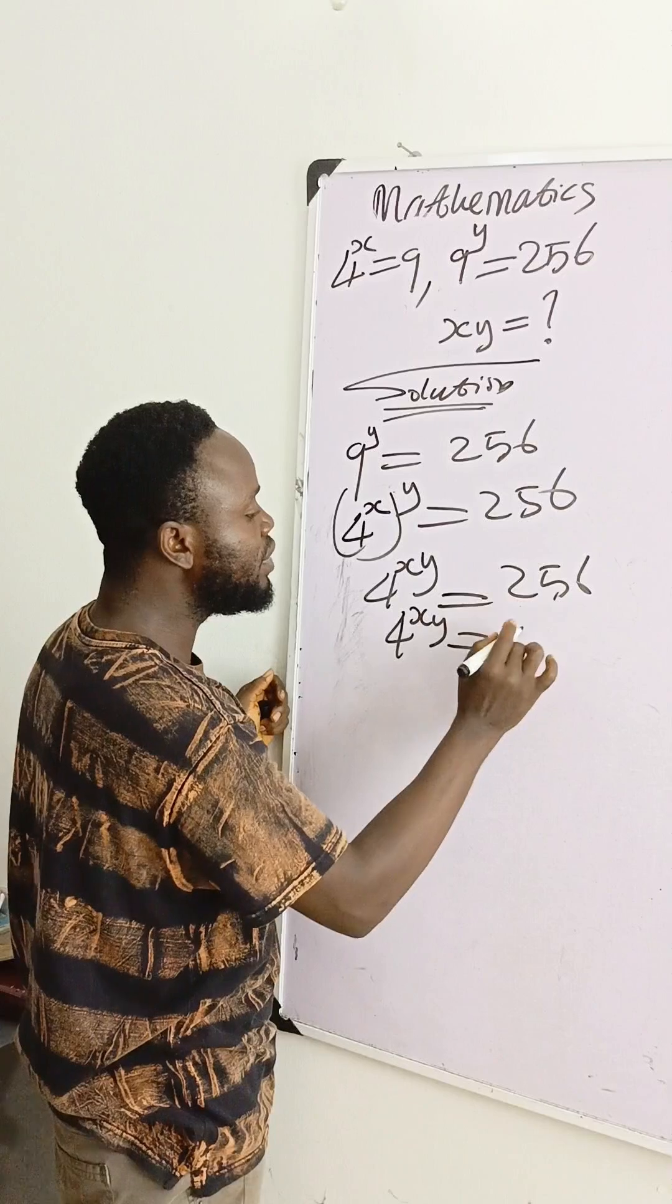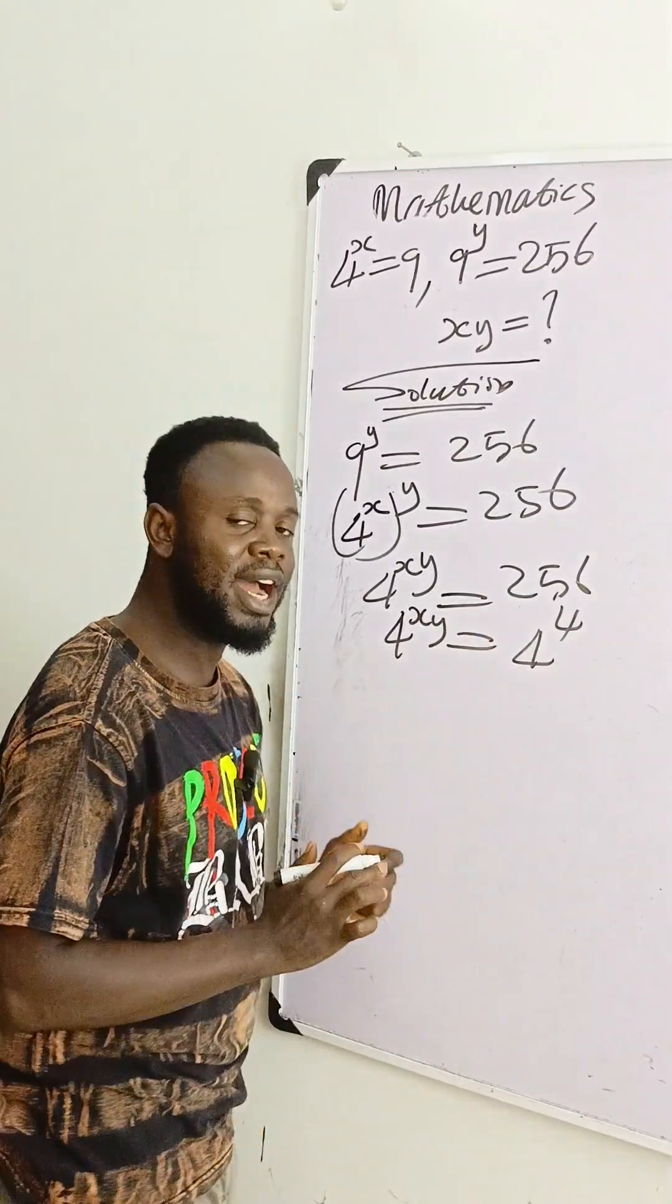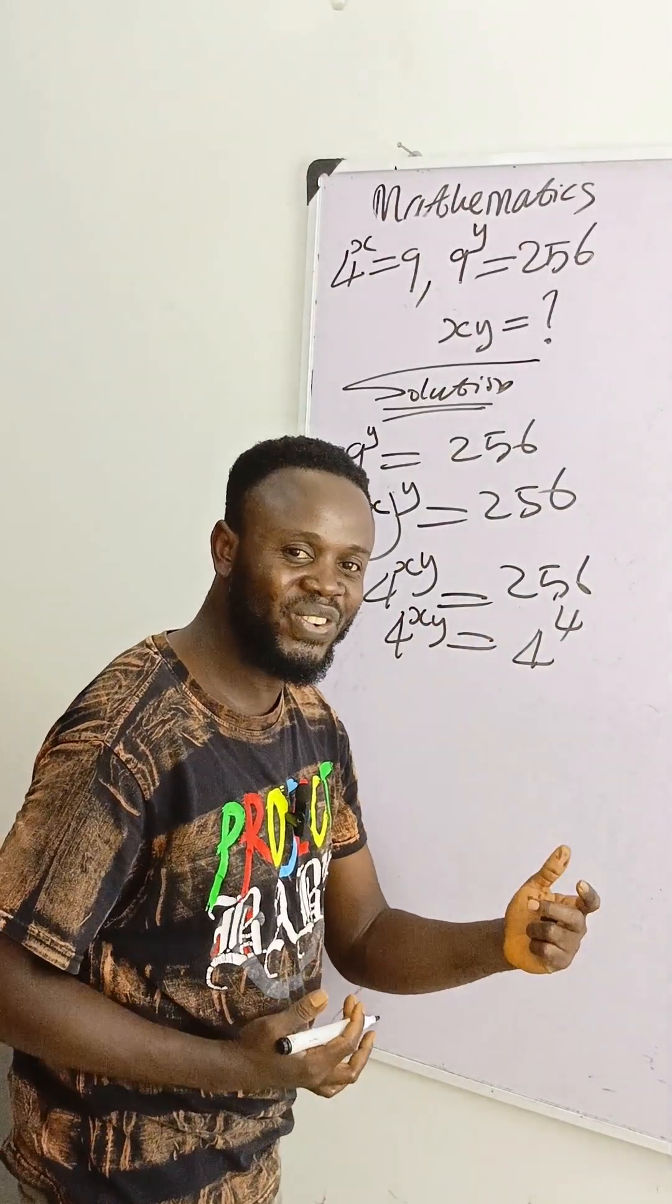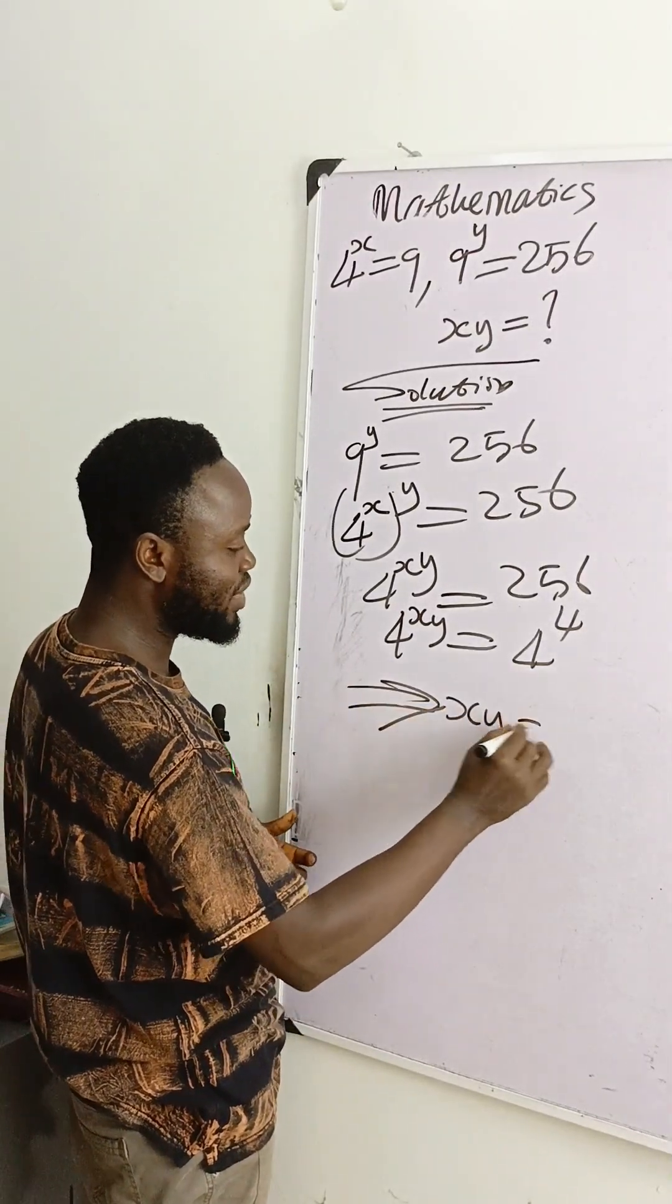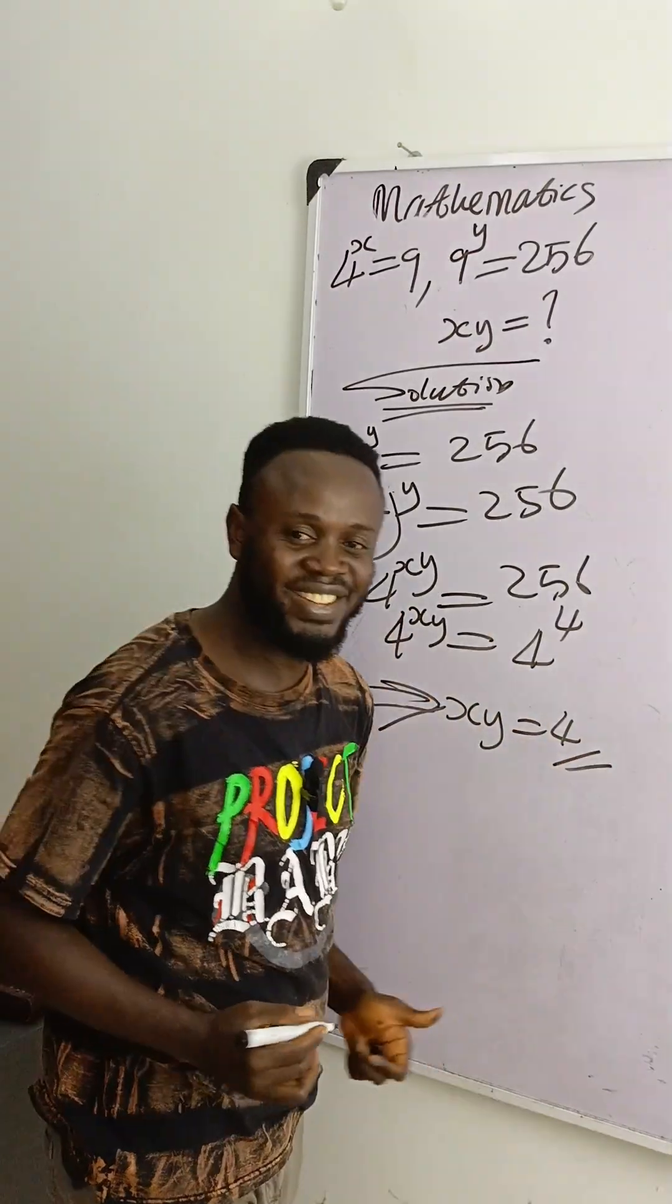4 raised to power xy is equal to 256, which is 4 raised to power 4. Since the bases are equal, our exponents are also equal, and that implies that xy is equal to 4. That's the final answer. Thank you.